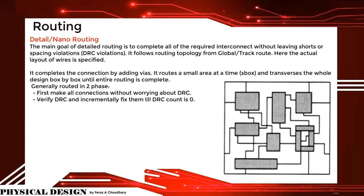Detailed routing, or nano routing, has the main goal of completing all required interconnects without leaving shorts or spacing violations, that is DRC violations. It follows the routing topology from the global track route, specifies the actual layout of wires, and completes connections by adding vias. It routes a small area at a time and processes the whole design box by box until entire routing is complete. Generally routed in two ways: first, make all connections without worrying about DRC; second, verify DRC and incrementally fix them until DRC count is zero.